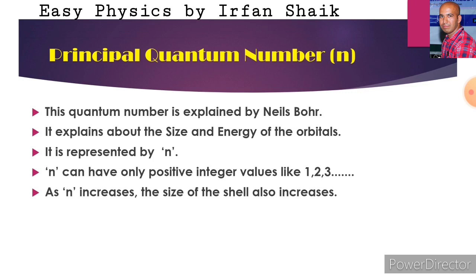For example, if n is equal to 1, it has only one shell. If n is equal to 2, it has two shells. If n is equal to 3, it has three shells. Like that, if the value of n increases, the size of the atom also increases, that means the size of the shell also increases.